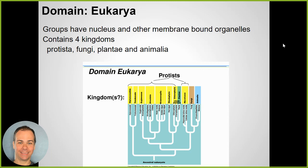The last of the three domains is eukarya - the one we're probably most familiar with. This includes things that do have a nucleus, so they're called eukaryotes. Their genetic material has a membrane around it, keeping it enclosed. There are four kingdoms within eukarya: protista, fungi, plantae, and animalia - plants, animals, fungi, and the protists.